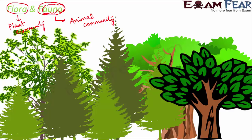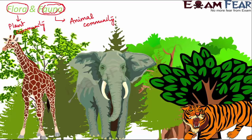Fauna is for the animal community. Flora includes all sorts of plants in a forest — huge trees, shrubs, and grasses. Fauna includes all sorts of animals — whether big animals like lion, tiger, elephant, and giraffe, or birds, tiny insects, or frogs. Together, flora and fauna form the forest.